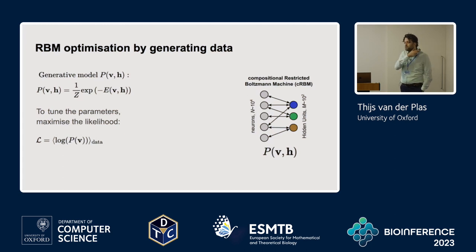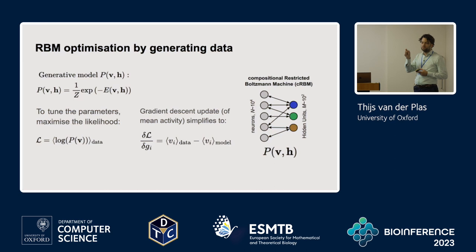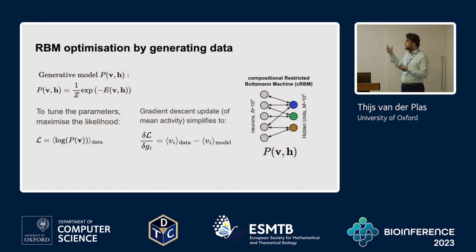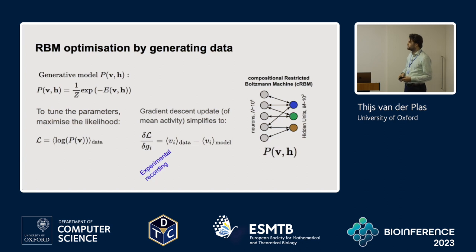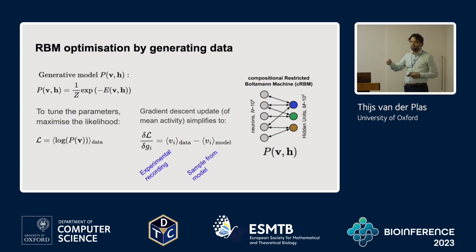When we derive the gradient descent updates from this likelihood, they simplify greatly. The update for the mean activity parameters is just the difference in mean activity between the recorded data and the model. The mean activity of the data we know because we've recorded the fish — we can just compute the mean. For the model, we sample activity using a Markov chain and compute the mean. The difference between these two constitutes the gradient updates.